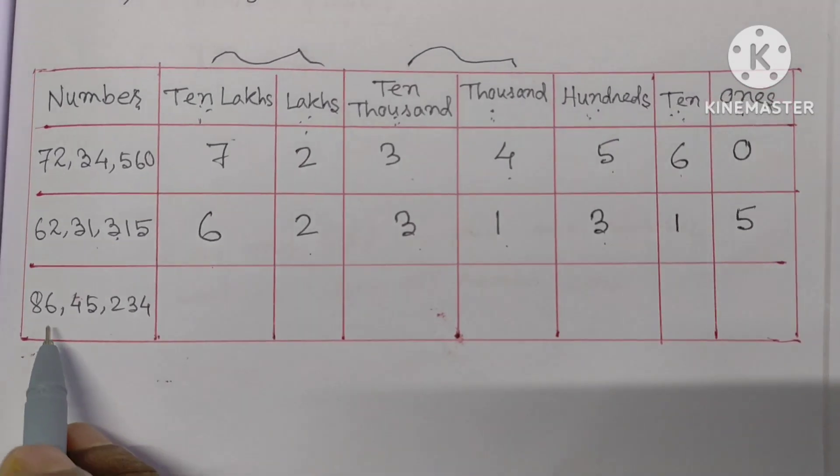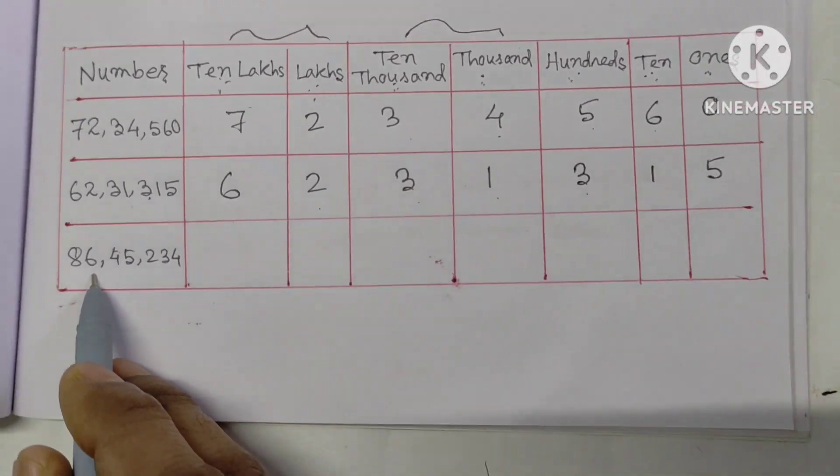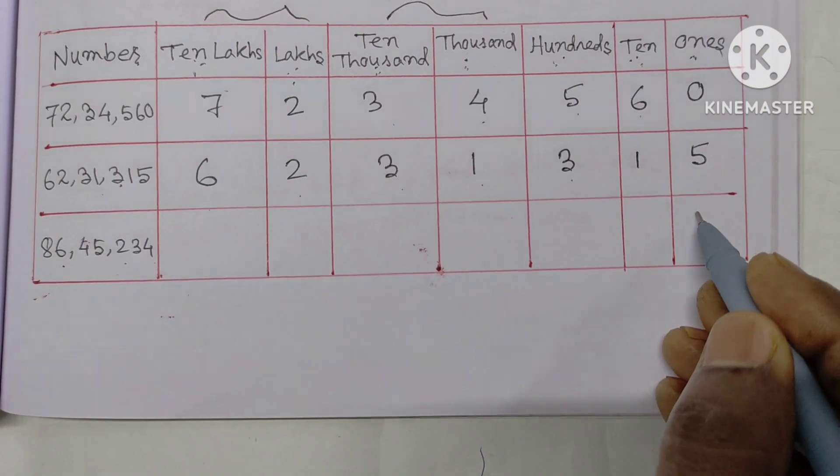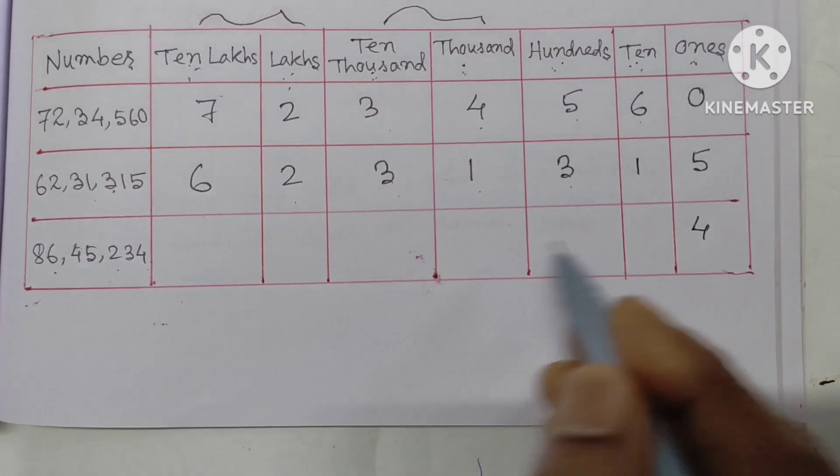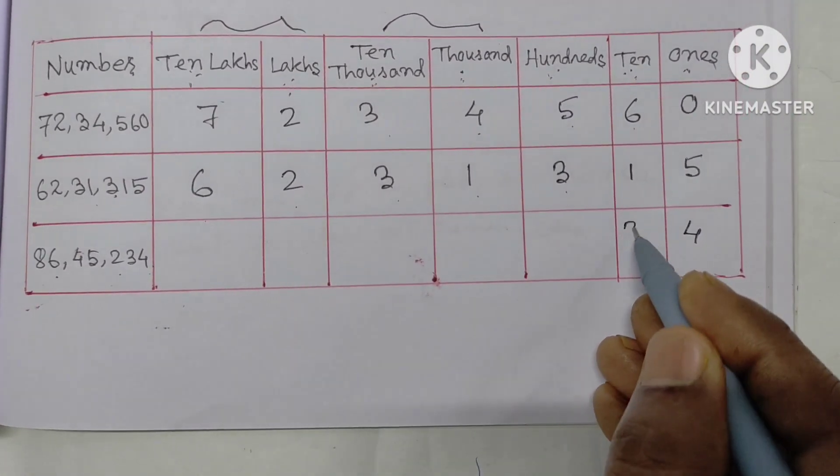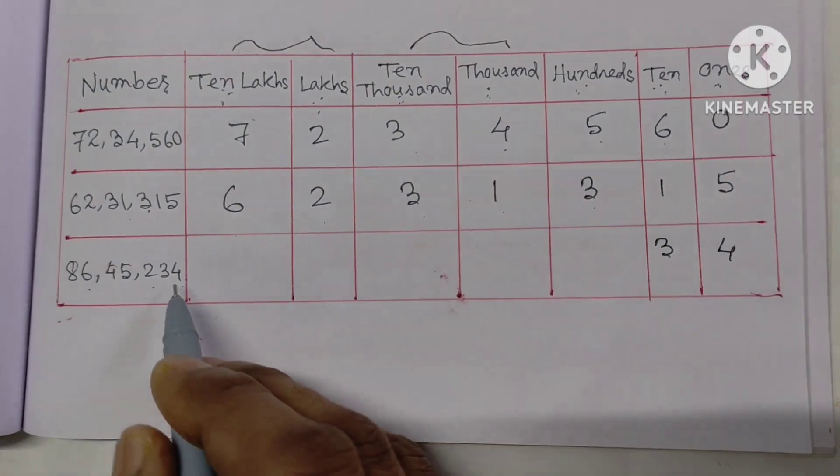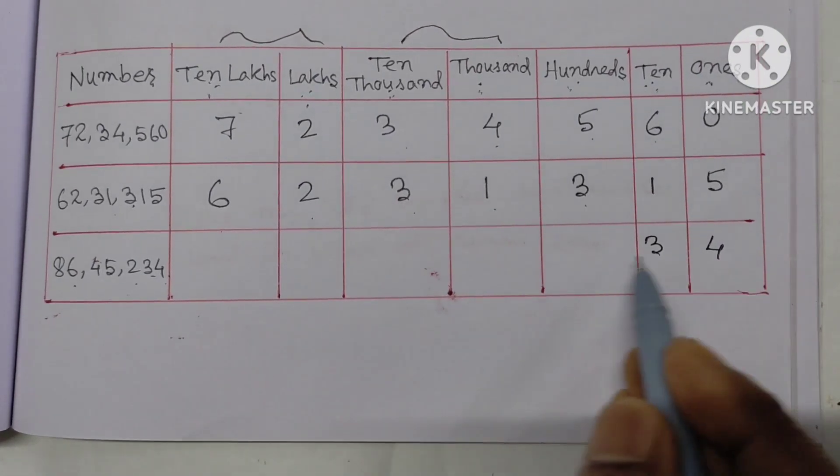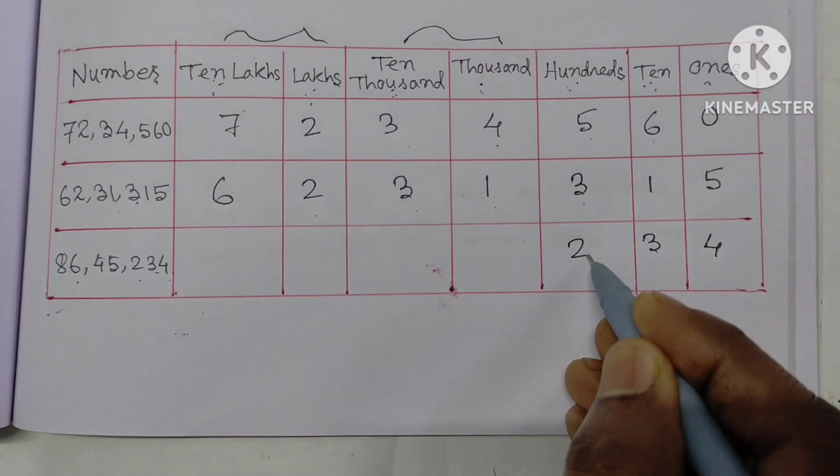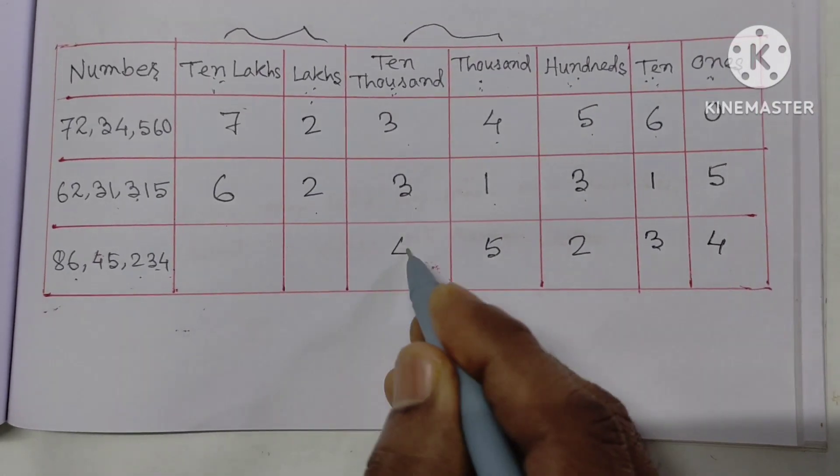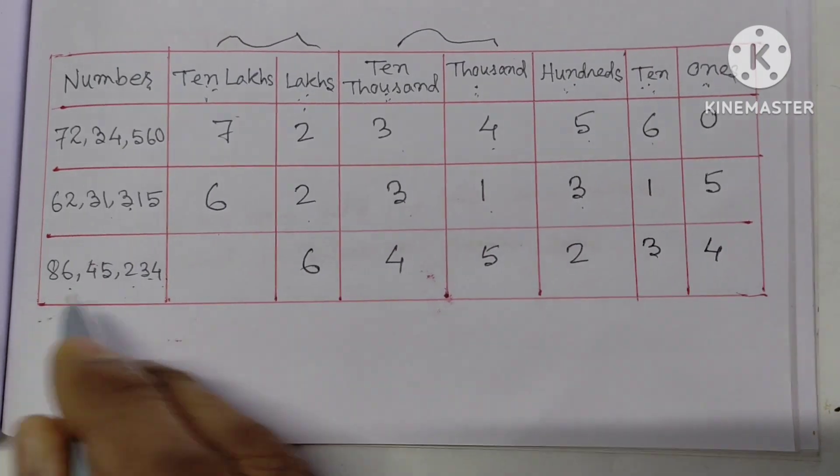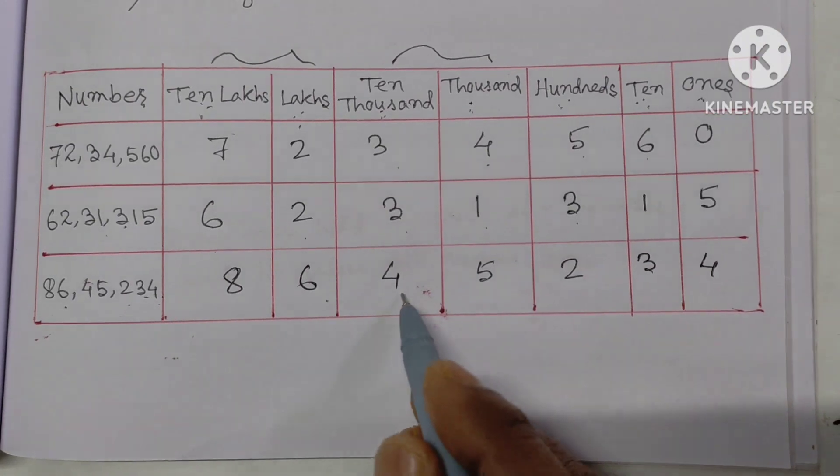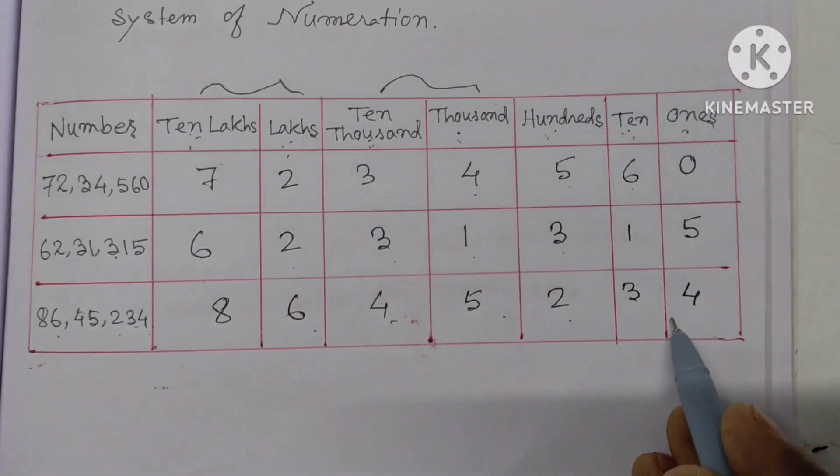Next one is 62 lakhs, 31,315. Then 86 lakhs, 45,234. Unit place 4, tens place 3, hundreds place 2, thousands place 5, ten thousands place 4, lakhs place blank, ten lakhs place 8 and 6. That means 86 lakhs, 45,234.